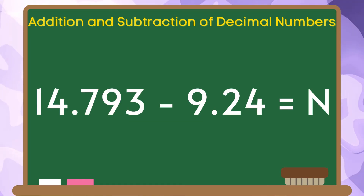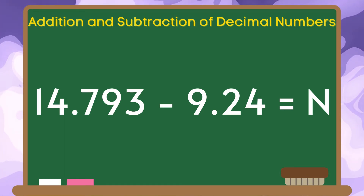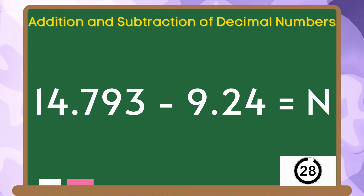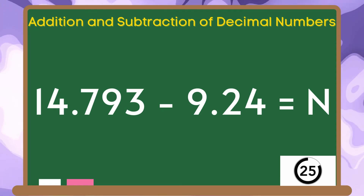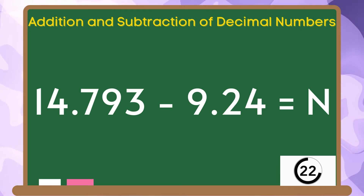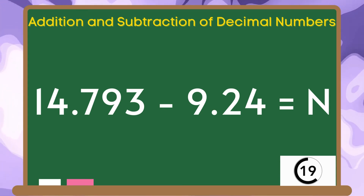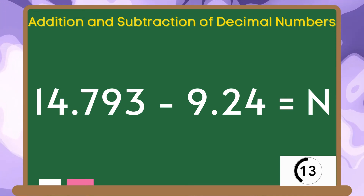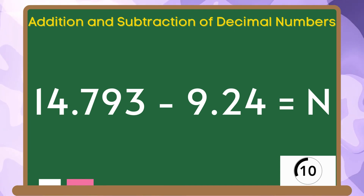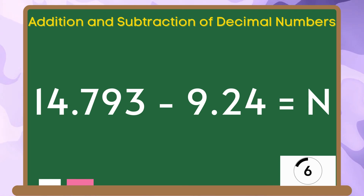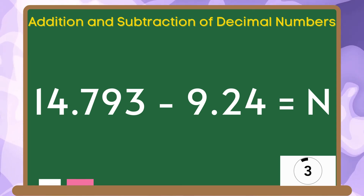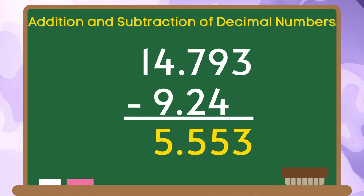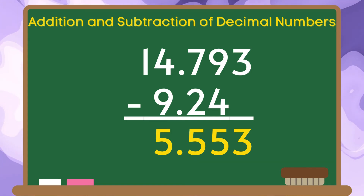Find the difference between 14 and 793 thousandths and 9 and 24 hundredths. The correct answer is 5 and 553 thousandths.